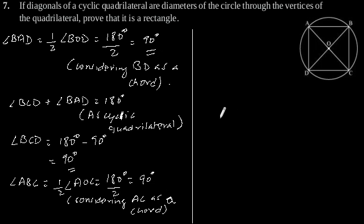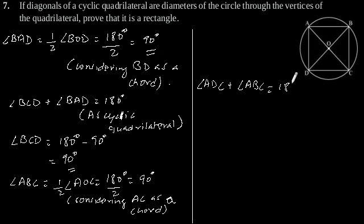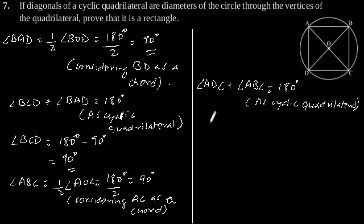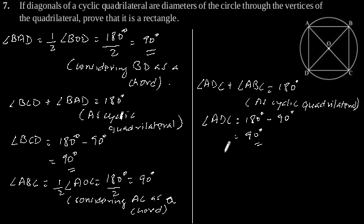Now again, as this is a cyclic quadrilateral, angle ADC plus angle ABC is equal to 180 degrees as it is a cyclic quadrilateral. This gives angle ADC equal to 180 degrees minus 90 degrees, which is equal to 90 degrees.